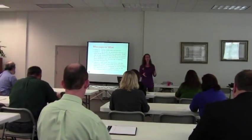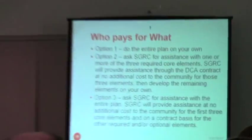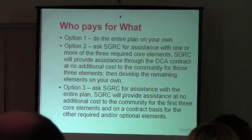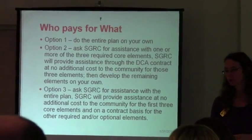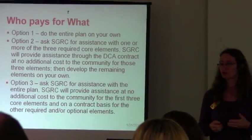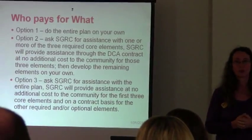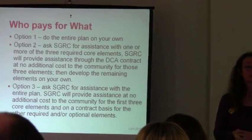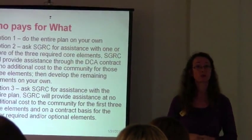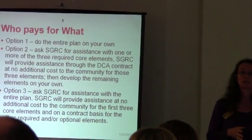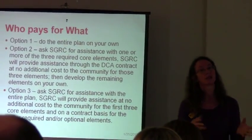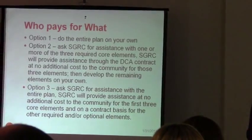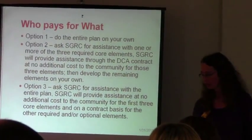There are really three options. You can do the entire plan on your own — if you have a fairly recent partial update or full update, it's probably not going to be that hard. You can ask us for assistance with the required core elements at no additional cost and then develop the remaining elements on your own. Or you can ask us for assistance with the entire plan: we'll do the three core elements for you at no cost and do the other required elements under a technical assistance contract.